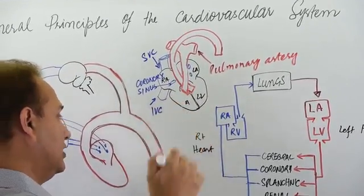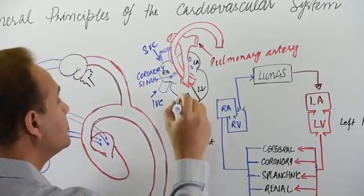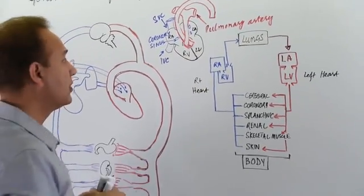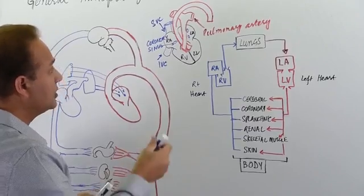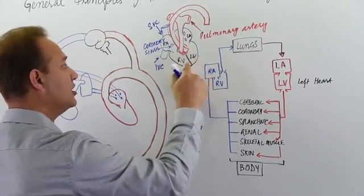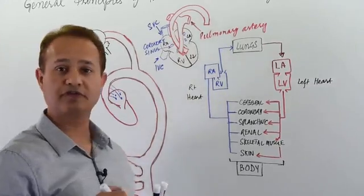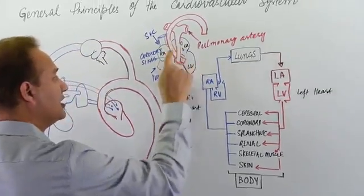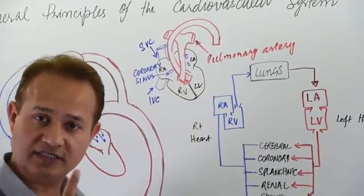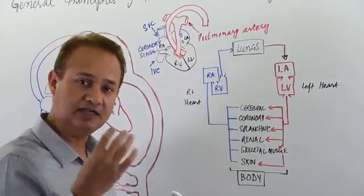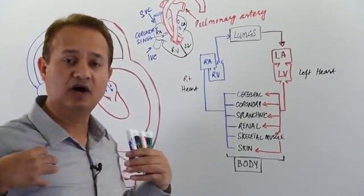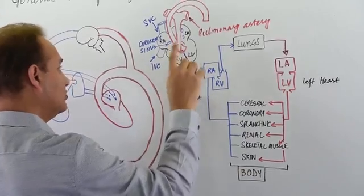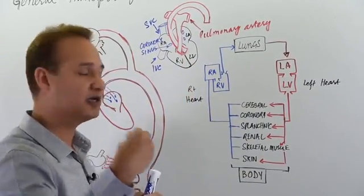On the left side — left atrium and left ventricle — blood comes in through the pulmonary veins. Veins are defined as all blood vessels that bring blood to the heart. Pulmonary veins bring oxygenated blood from the lungs to the heart; it is not necessary that veins carry deoxygenated blood.